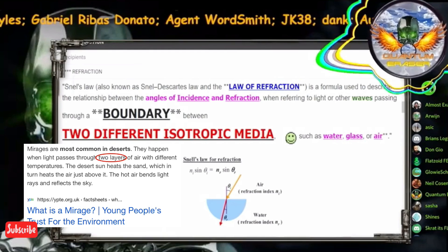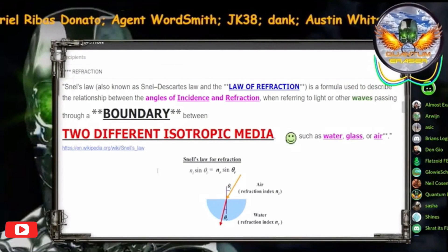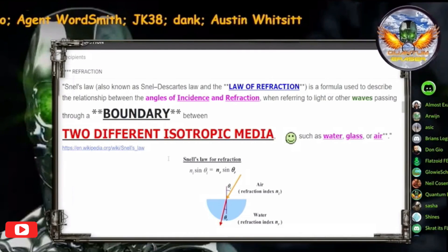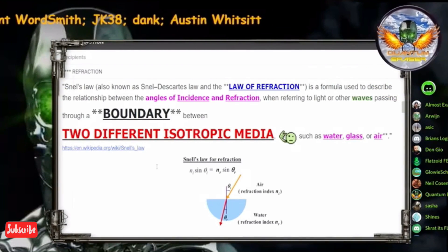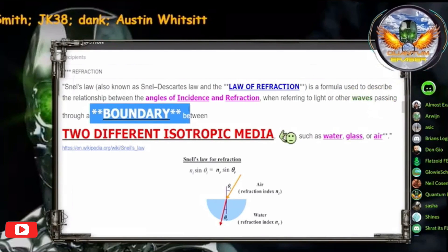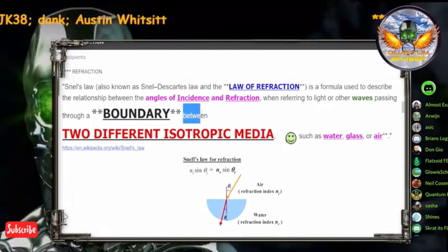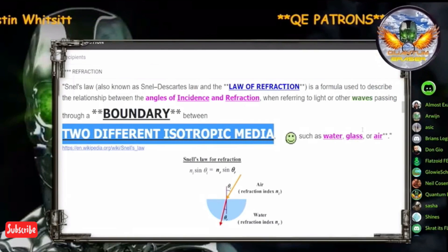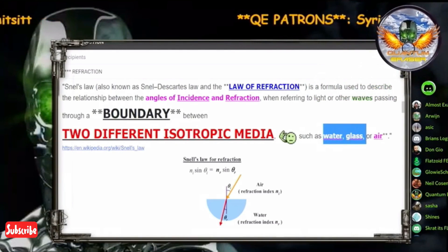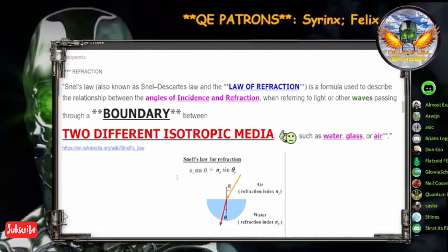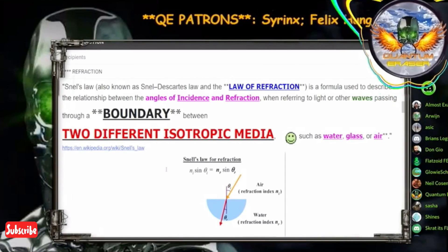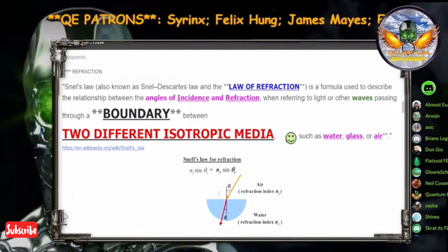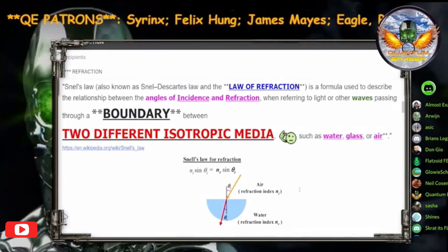From his alma mater, Wiki: 'Snell's law, also known as Snell–Descartes law and the law of refraction, is a formula used to describe the relationship between the angles of incidence and refraction when referring to light or other waves passing through a boundary.' Do you see this word — 'boundary' — and then the next word, 'between,' and then 'two different isotropic media'? It gives examples: water, glass, or air. Do you see that? Do you see the formula? Medium change. Do you see this, you clown?